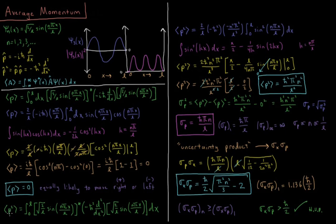Now we can compute the average value of momentum squared using a similar expectation value integral — psi-star, operator, psi. In this case, our operator is the momentum squared operator, minus h-bar squared d²/dx². The second derivative of sine is negative sine; for sine(kx), that's negative k-squared sine(kx). So we pull out nπ/l twice with a negative sign, giving negative n²π²/l². We also pull out the negative h-bar squared from the operator, and two factors of square root of 2 over l give 2 over l. The remaining integral becomes the integral from 0 to l of sine squared(nπx/l) dx.